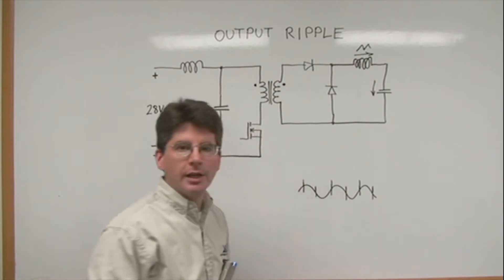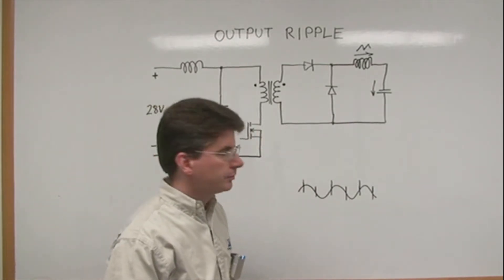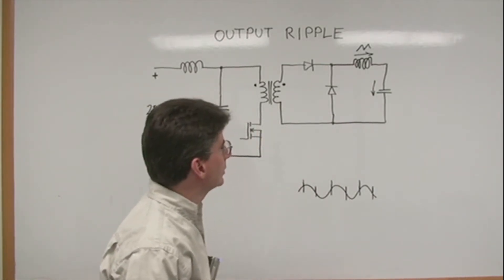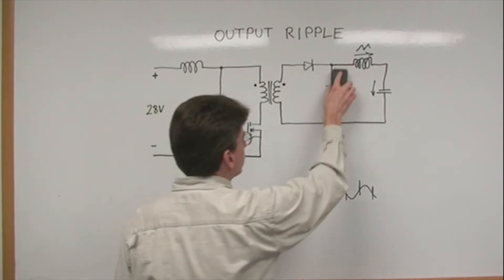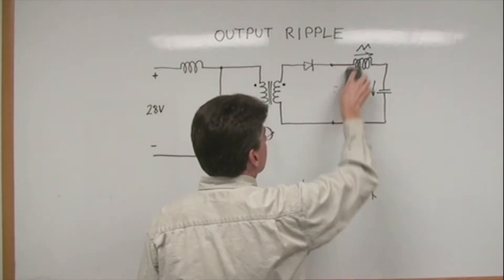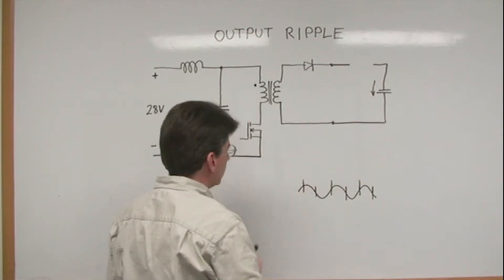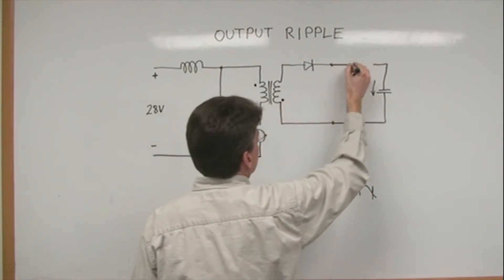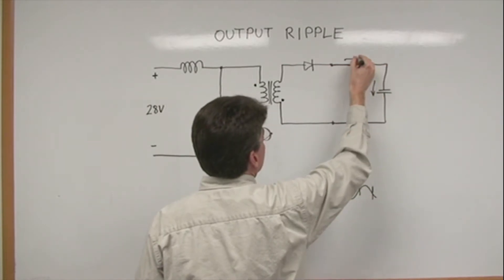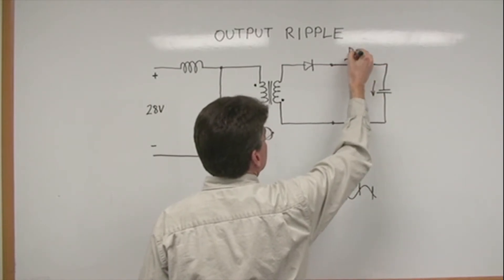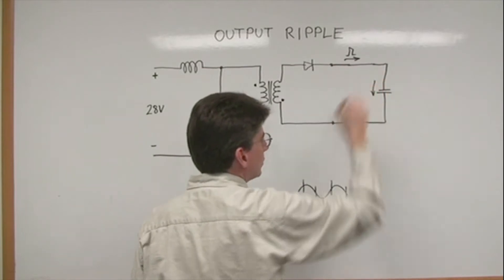Separately, we also use a flyback topology. Flyback topology is slightly different in that it creates a pulsating current, something like this, which also flows in the output capacitor and creates voltage ripple on that capacitor.